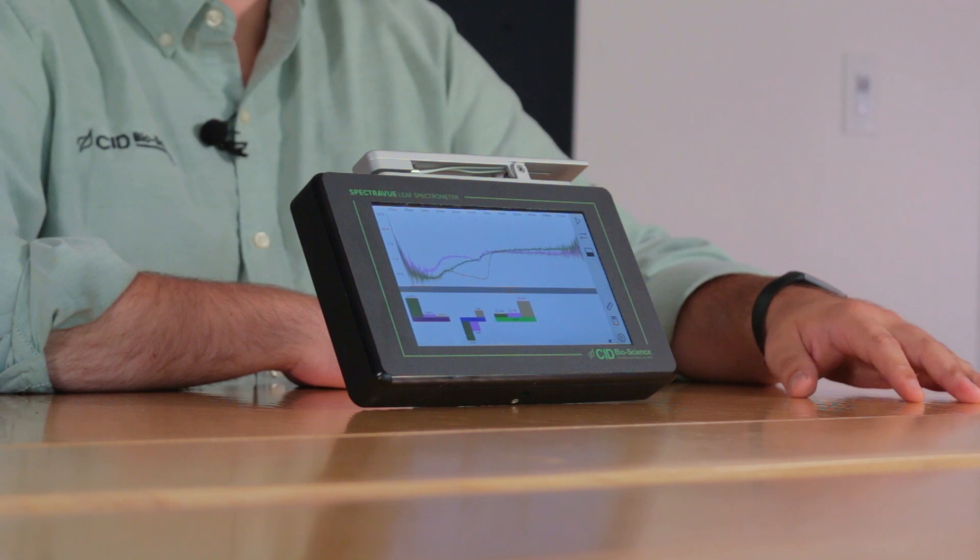The SpectraView is a portable and field-ready leaf spectrometer that is useful for anyone from agronomists to plant physiologists, horticulturists, or even classroom education. The instrument is capable of taking absorbance, transmittance, and reflectance measurements all with a single scan.